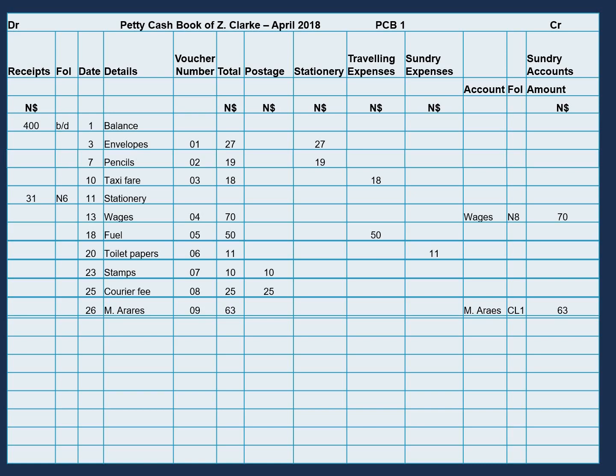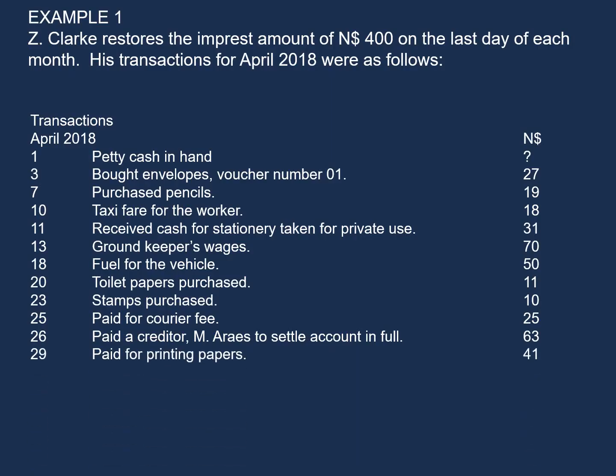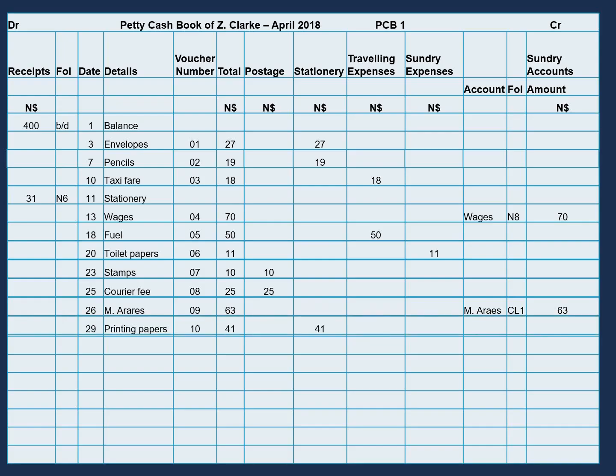On the 29th of April, paid for printing papers, $41. You can probably guess this is stationery. We will enter this on the credit side of the cash book, the voucher number will be 10, the total amount will be $41, and we will classify this under stationery.